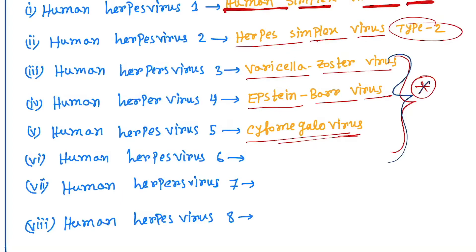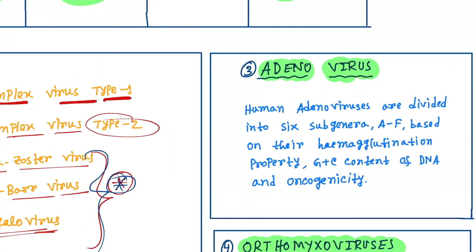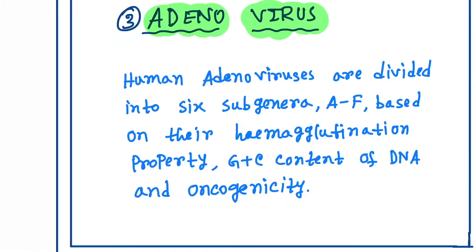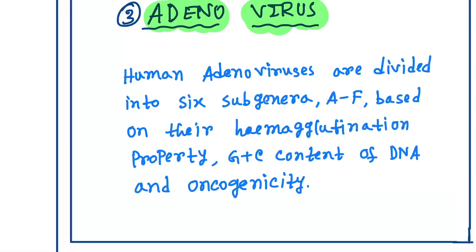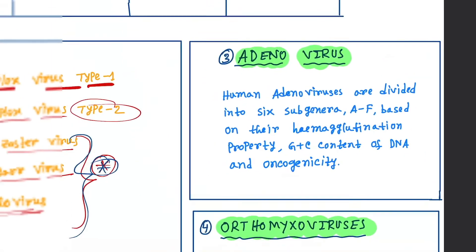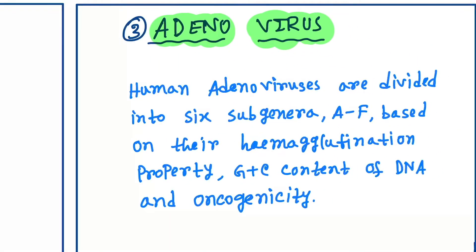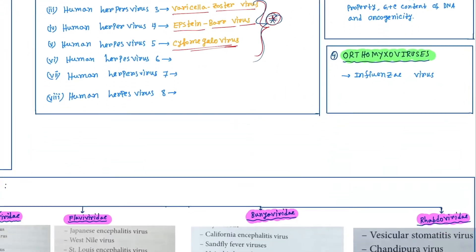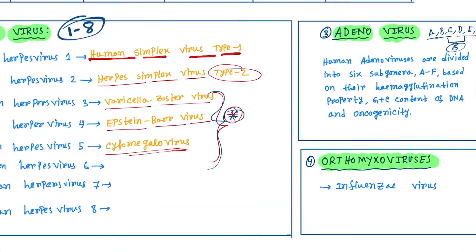Next classification is adenovirus. Human adenoviruses are divided into 6 subgenera, A to F, based on their hemagglutination property, G+C content of DNA, and oncogenicity — so subgenera A to F, 6 in total. Next classification is orthomyxovirus.